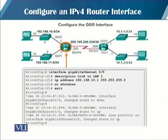This is a typical network, and now we are going to configure the G0/0 interface, which is the gigabit LAN interface. The command is 'interface GigabitEthernet 0/0'. We provide a description 'link to LAN 1', then configure the IP address and subnet mask of this interface, followed by 'no shutdown' and 'exit'. This configures the interface with the IP address and subnet mask.